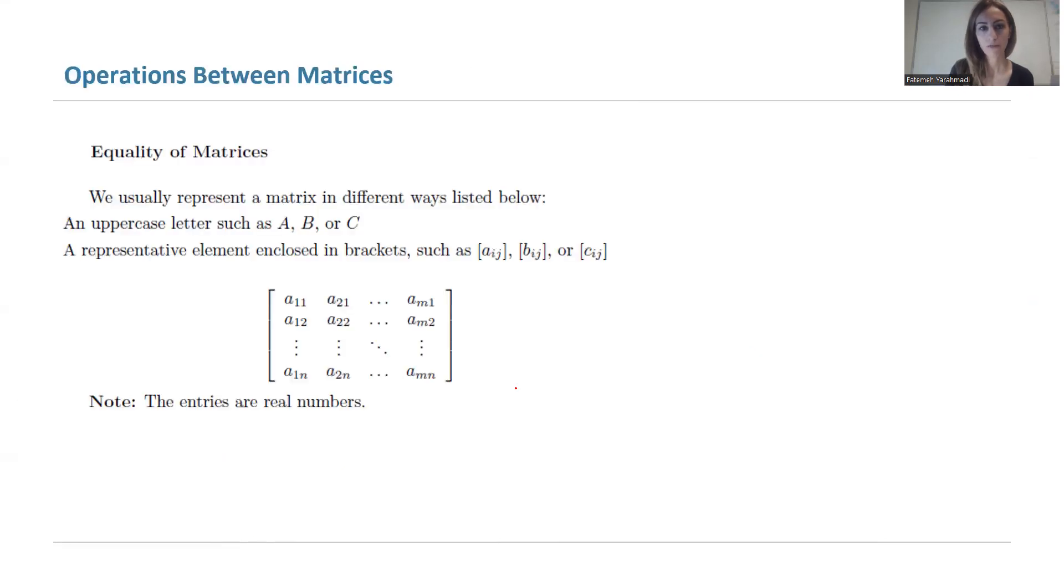First of all, when we are representing a matrix you can use different ways. You can use capital letters like A, B, C, or so on, or you can use enclosed brackets and just write down the general form of an entry like A sub ij, B sub ij, or C sub ij, or basically you can list the matrix with all of its entries A sub 11, A sub 21, which all represent the entries on each row and column.